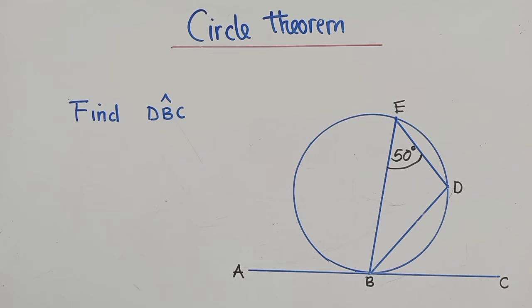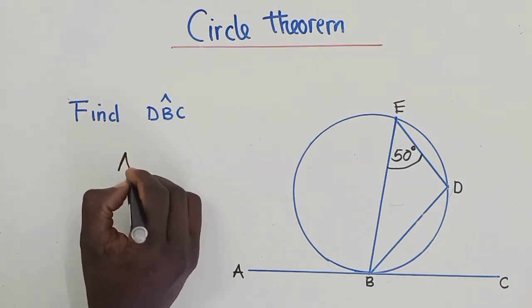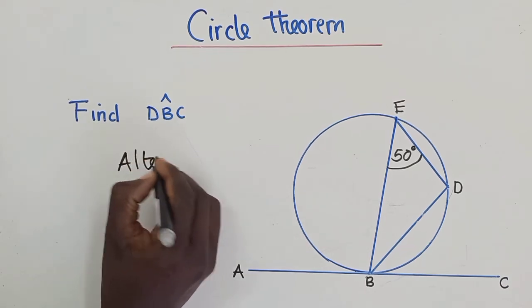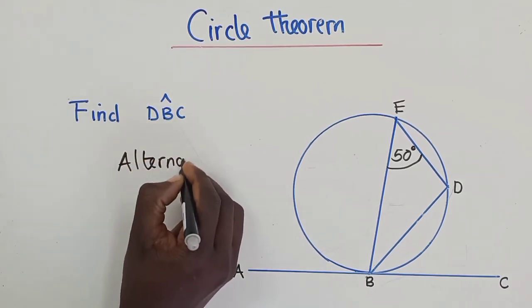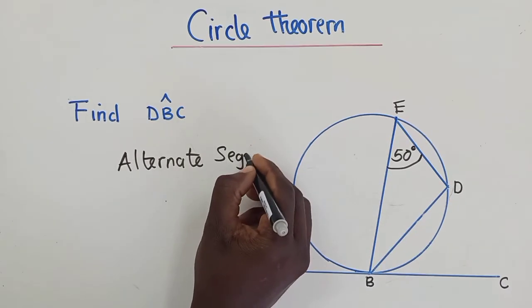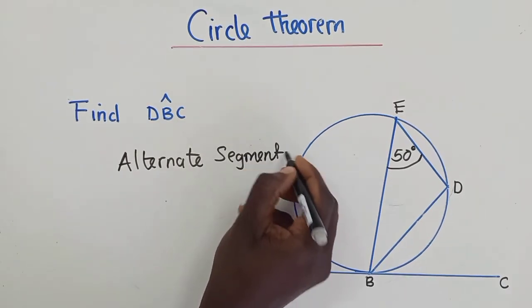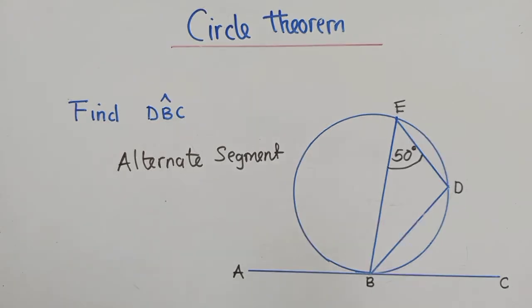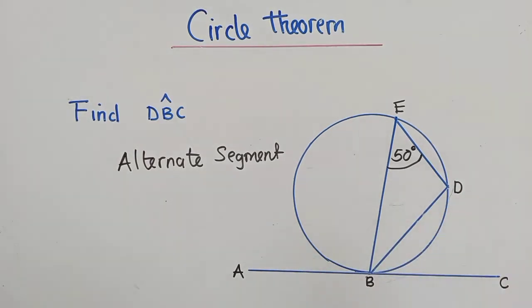And that property is called alternate segment. So we definitely need to know this property if we were to answer this question.